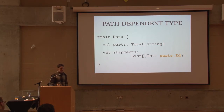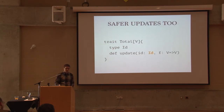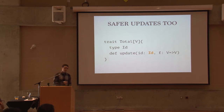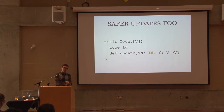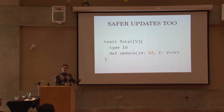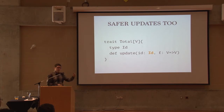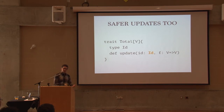We get safer lookups and also safer updates. This update function is a bit hard to implement safely with ordinary maps because you don't have a guarantee that the key you're passing in actually corresponds to an element that's present. Here, since we know that, we can have an update function — you just pass an identifier to it and a function you want to run on the present element to change it.